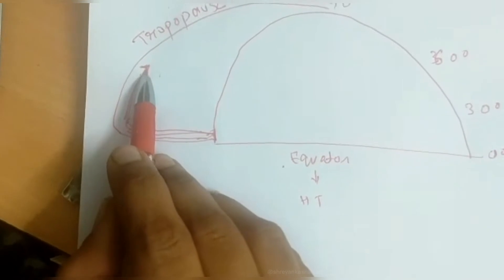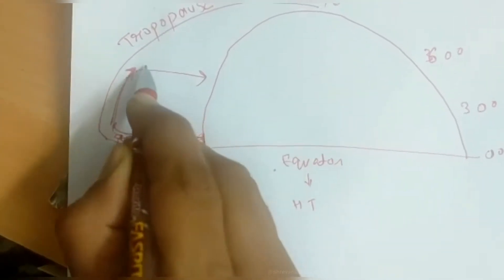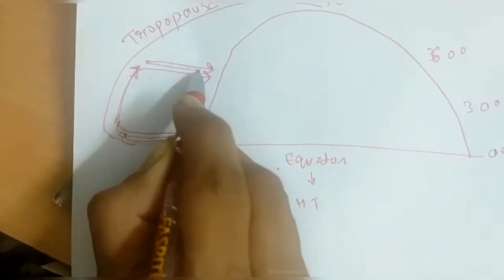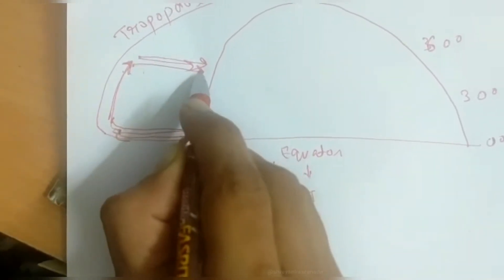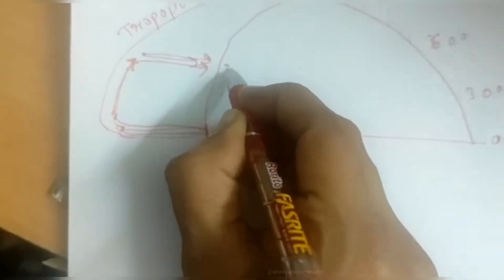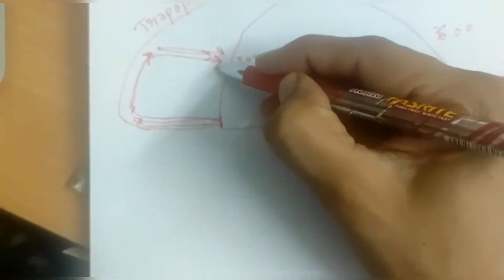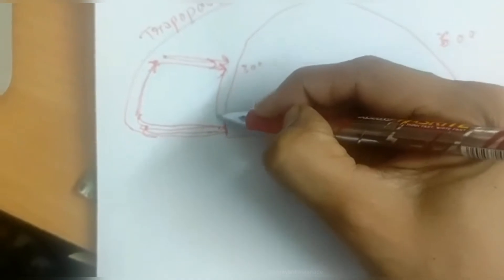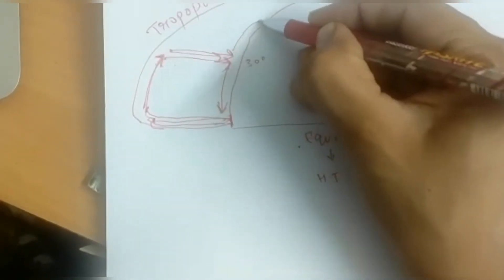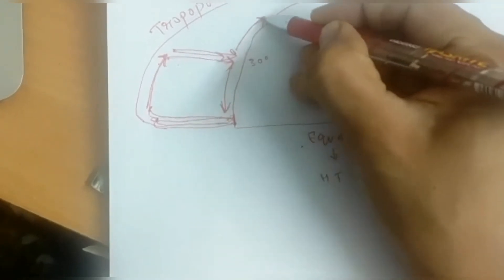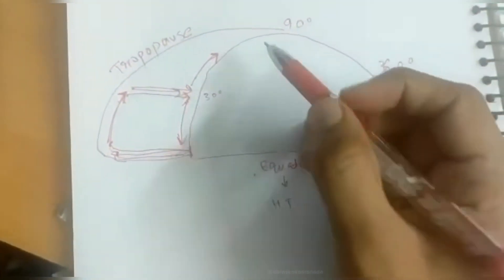The air is cooling, and once it cools down, it sinks back to the surface. So when the air is sinking at around 30 degrees, one air current moves towards the equator and the other air current moves towards the polar areas — not yet reaching the pole but moving in that direction.